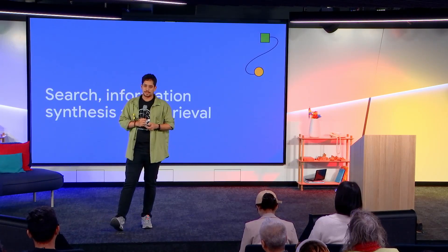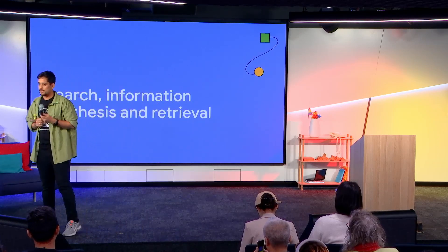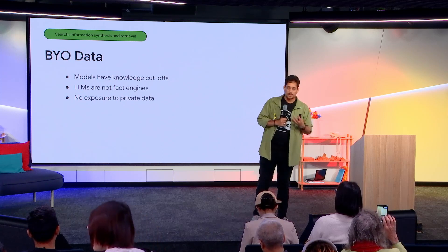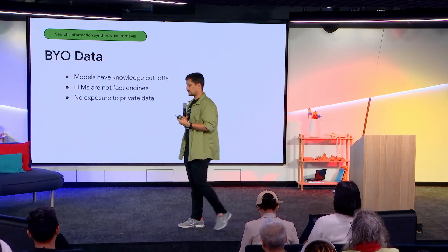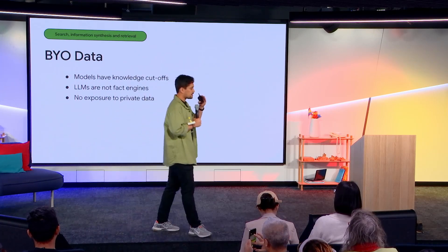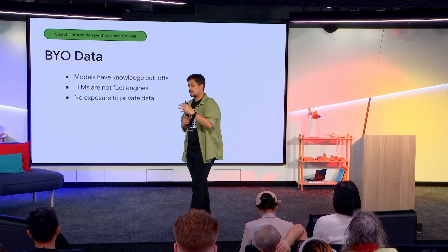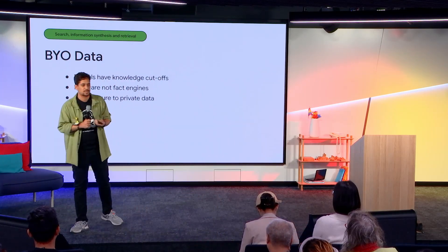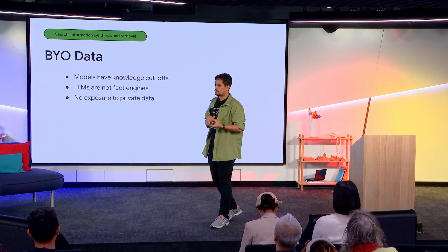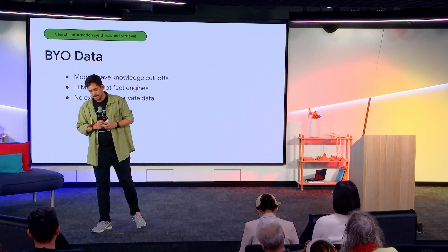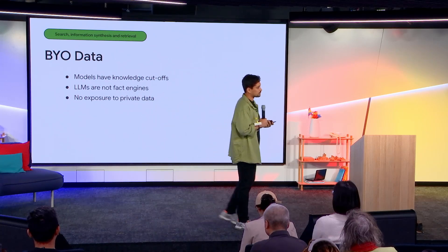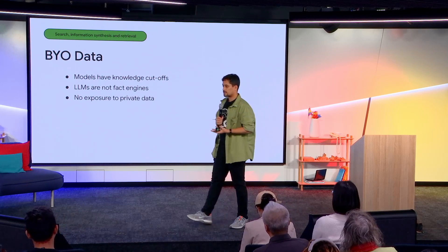Next up is search information synthesis and retrieval. Another powerful thing about LLMs is that you can give it some data and it will take it as absolute truth — this is where you bring your own data to Gemini. All LLMs, no matter which one or how much you're paying, have a cutoff date, which means there is a knowledge gap between that cutoff date and today. You need to get your information to the LLM to solve your problems. LLMs are not fact engines — they're generative AI, which means they will hallucinate and give you random or factually incorrect answers if they don't know the right answer.